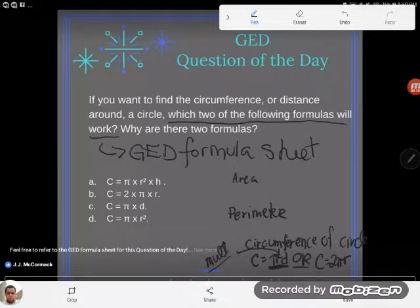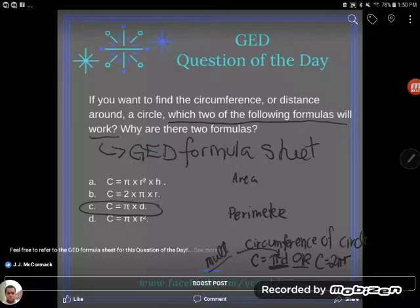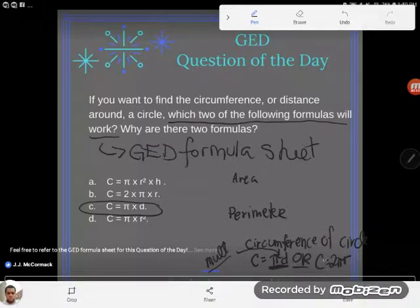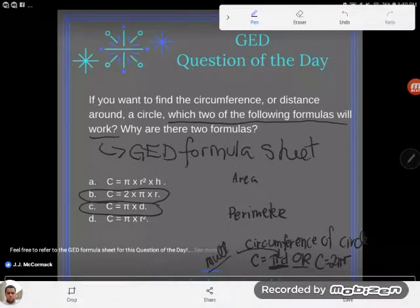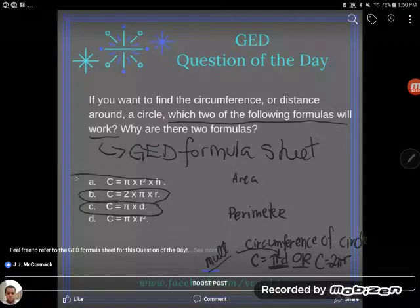So pi next to D means pi times D. And so definitely that's that first formula. And second one is C equals two pi R. Again, those three things are just shoved together with no operation in between, meaning the three are multiplying. So B, C is equal to two times pi times R. So first part of the question, which two of the following formulas will work? C or D are two different ways to find the circumference of a circle.